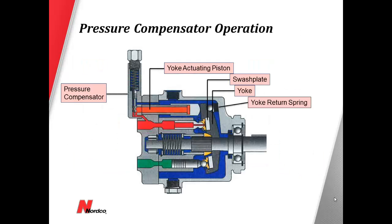The pressure compensator controls pump outlet pressure. This is done by the spring and spool in the compensator. The spool is lifted off the seat to cause the yoke actuating piston to move the swash plate back to a zero degree angle and provide the set operating pressure.